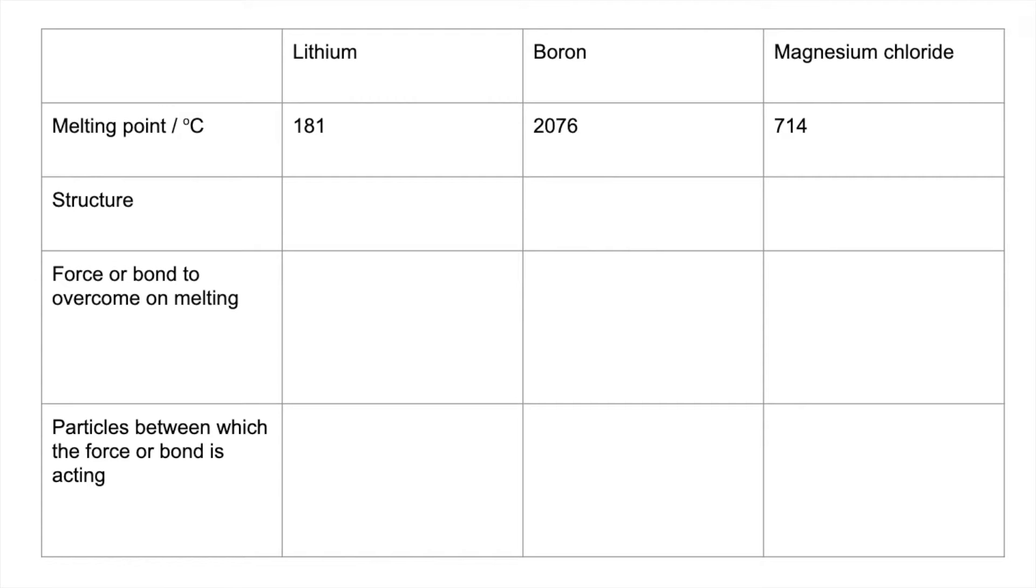We'll just do each row at a time. Structure first. Lithium has a giant metallic lattice. Boron is a giant covalent lattice. Magnesium chloride, a giant ionic lattice.